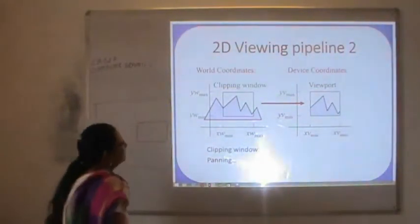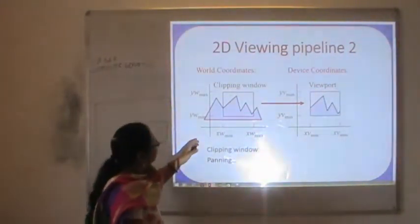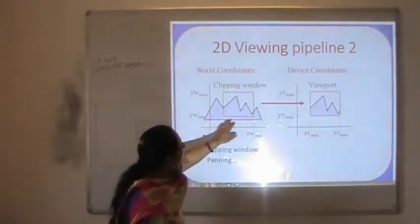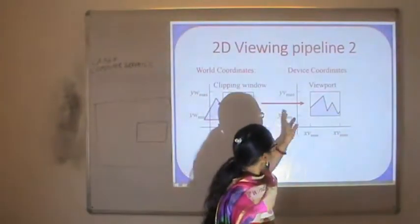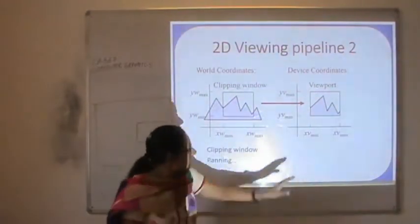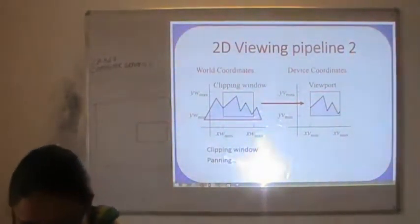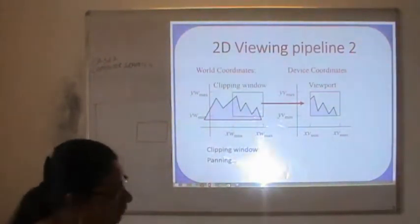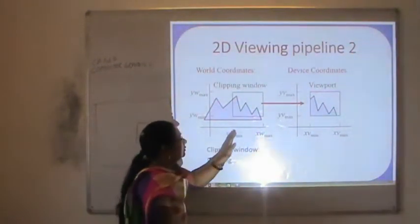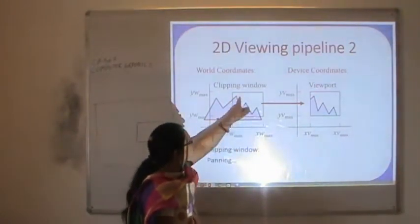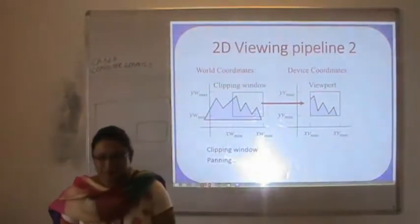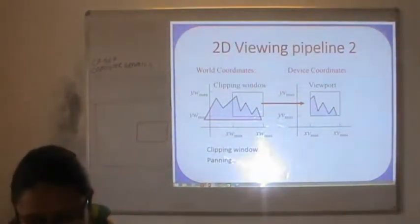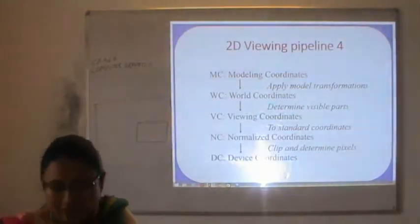In another example, using the same world coordinate system, we want to view a specific region, and this is the mapping of the world coordinates to the device coordinates. Suppose we change the window and want to see a different sub-area — that will be mapped to device coordinates accordingly. It depends on the selection of which sub-area we want to display.